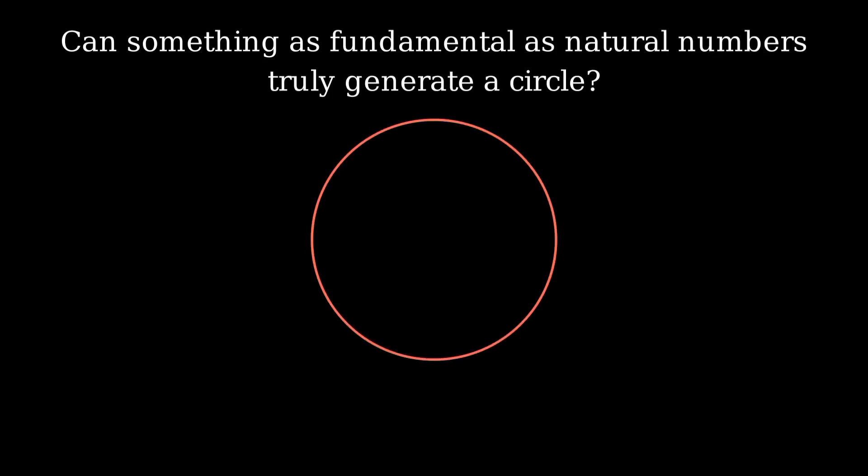But how does a product of such simple rational numbers connect to the seemingly transcendental number pi? Can something as fundamental as natural numbers truly generate a circle?